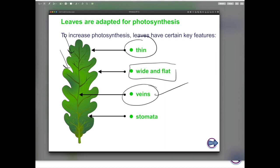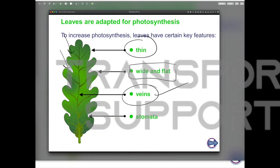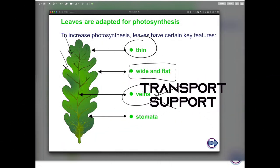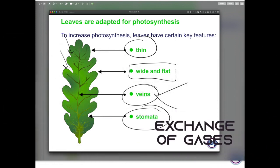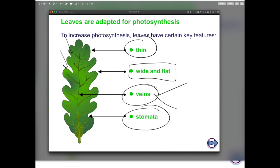Veins carry out two processes. Veins are to transport materials such as water. Veins also help to support the leaf, to keep the leaf in its right position to absorb more light. Finally, leaves have stomata. Stomata are air holes that allow gases to move in and out of the leaf. Carbon dioxide enters the leaf for photosynthesis while oxygen, which is a waste product of photosynthesis, diffuses out of the leaf.